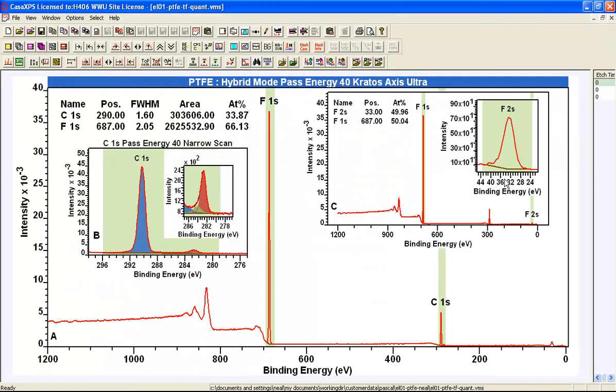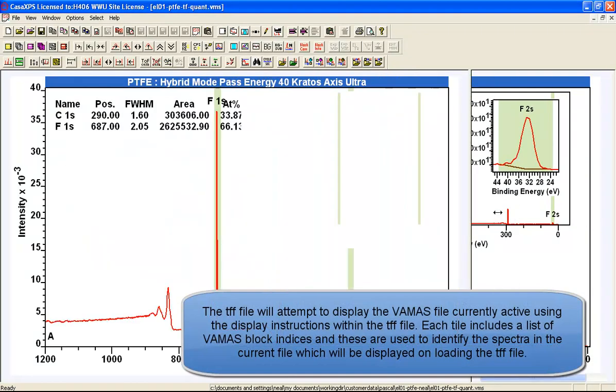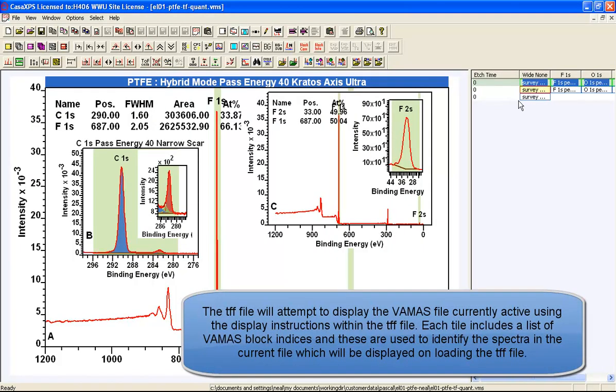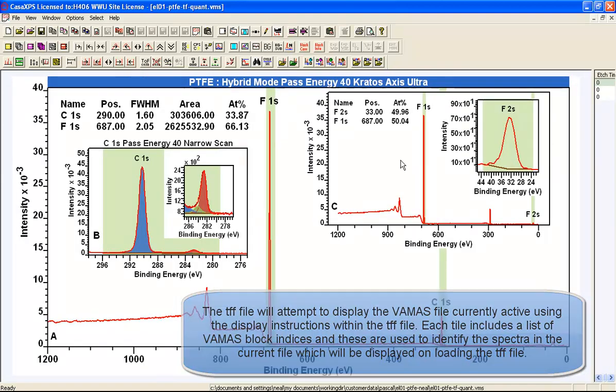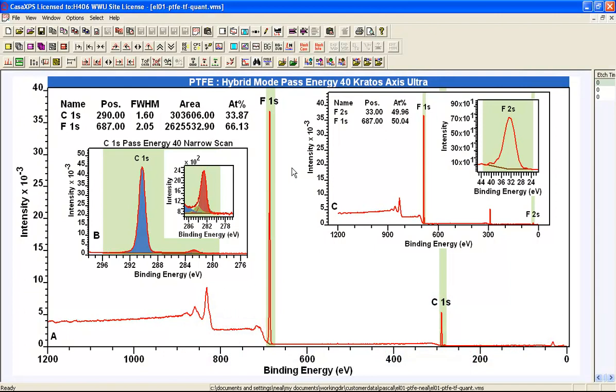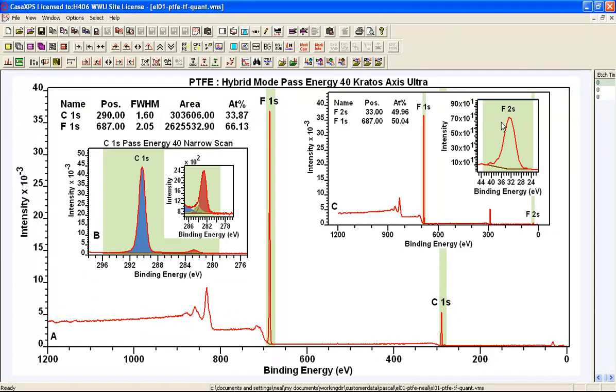So if I select this TFF file, you can see that we now have loaded a display format, and these are now associated with these VAMAS blocks, but they don't rely on the selection. They rely on the information that was in the TFF file, and it gives me the opportunity now to go around and display the data in a slightly different way.